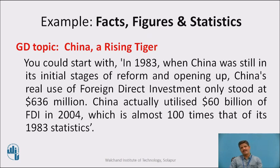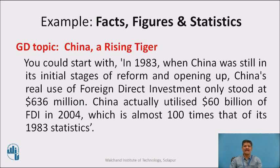You can also start a GD with facts, figures, and statistics. For example, for the topic 'China: A Rising Tiger': 'In 1983, when China was still in its initial stages of reform and opening up, China's real use of foreign direct investment only stood at 636 million dollars. China actually utilized 60 billion dollars of FDI in 2004, which is almost 100 times that of its 1983 statistics.' This is how you can start with facts, figures, and statistics.